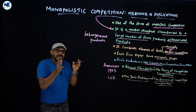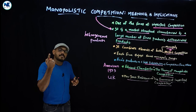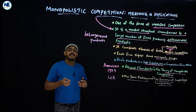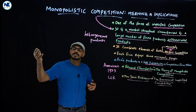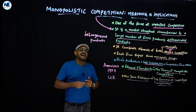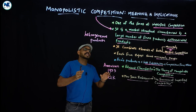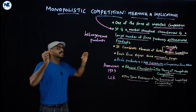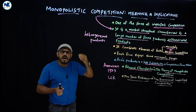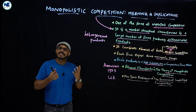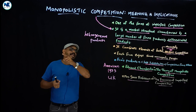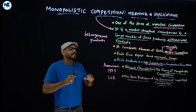Close substitutes and a large number of firms mean that each firm faces stiff or strong competition from other firms — similar to perfect competition. This is why differentiated products create a monopoly element, but close substitutes and competition limit that power.